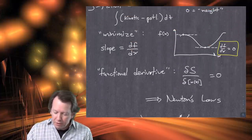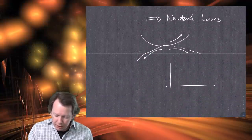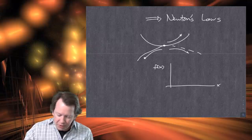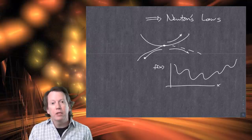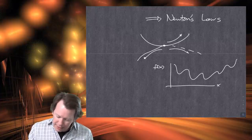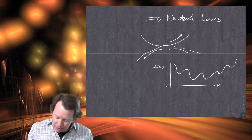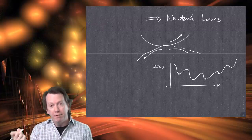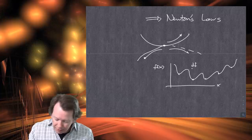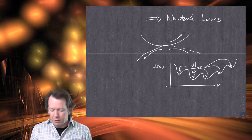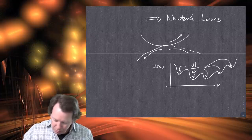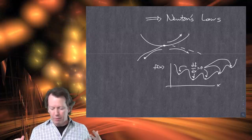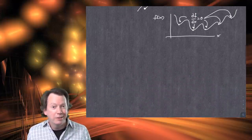Even if you rule out maxima, you can certainly have functions with multiple local minima — where at each local bottom, df/dx equals zero. Can we imagine that we might live at a local minimum rather than the global minimum? Yes — that's no problem whatsoever.